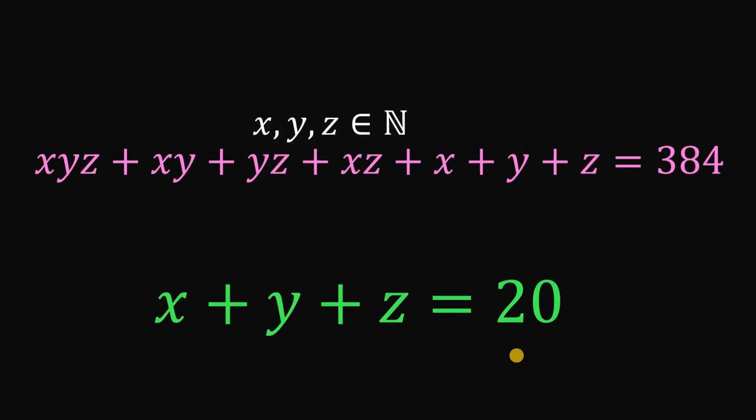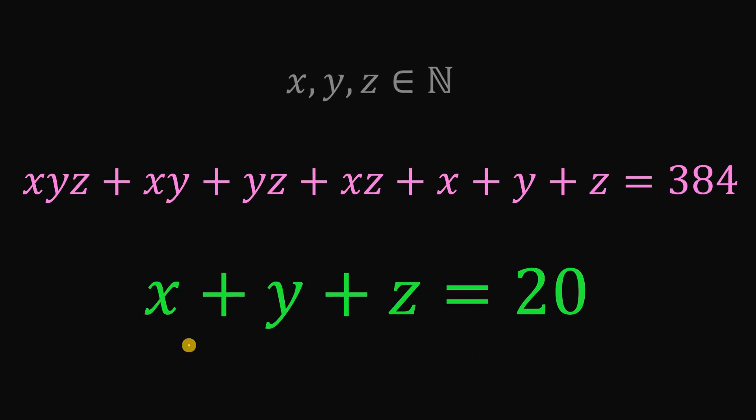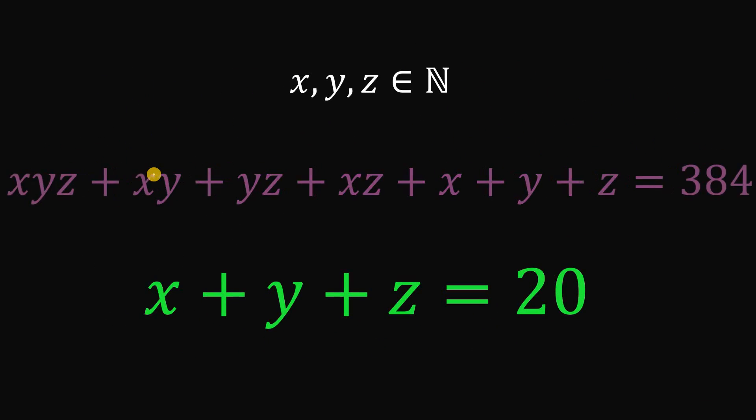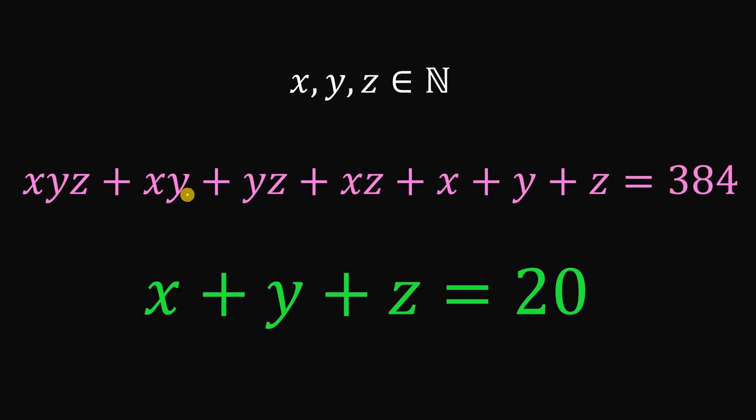Therefore, given that x, y, and z are all natural numbers that satisfies this equation, then the sum of x, y, and z is simply equivalent to 20. And as always, we are done.